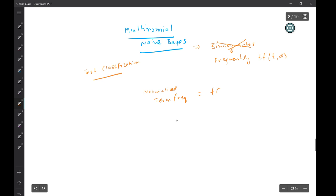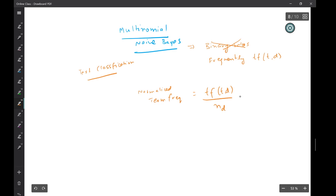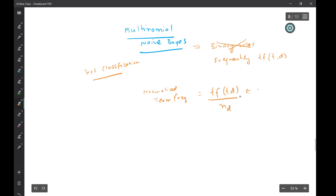Normalized term frequency can be written as TF of t comma d divided by nd. So the number of times a particular term appeared in a document divided by total number of documents. So this is the raw frequency, the count of term t in document d, and this is the number of documents.